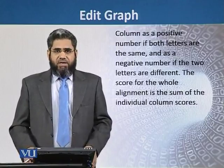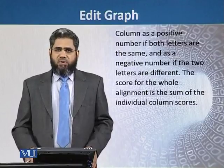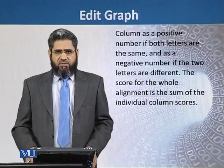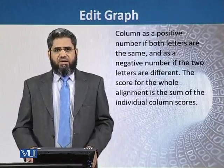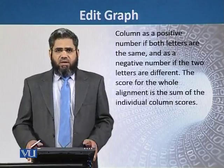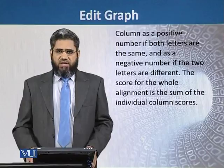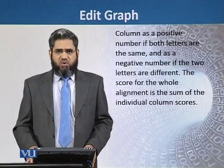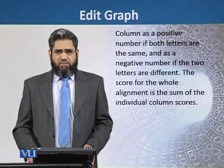There are many different scoring matrices. The simple one is that we assign a positive score in the column where there are identical alphabets, and we assign a negative score in the column where there is a mismatch. After calculating the individual scores of each column, we can calculate the score of the total alignment.